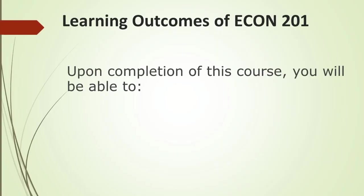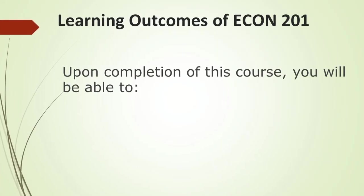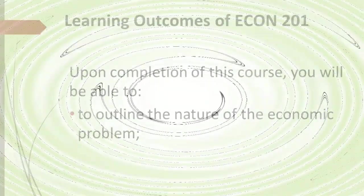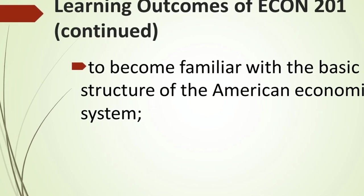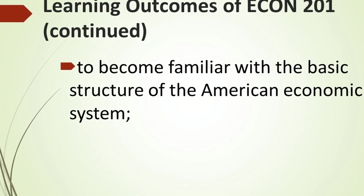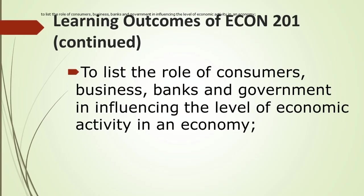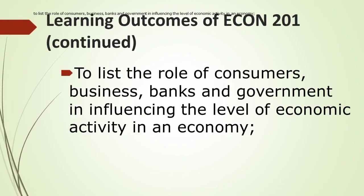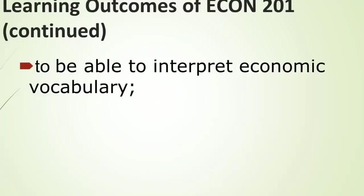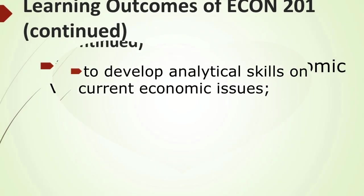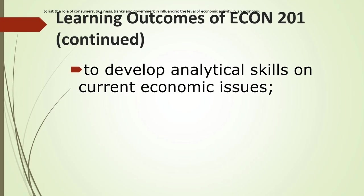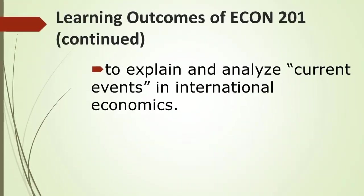Learning Outcomes of Econ 201: Upon completion of this course, you will be able to outline the nature of the economic problem, become familiar with the basic structure of the American economic system, list the role of consumers, business, banks, and government in influencing the level of economic activity in an economy, interpret economic vocabulary, develop analytical skills on current economic issues, and explain and analyze current events in international economics.